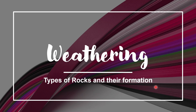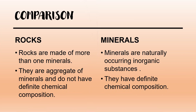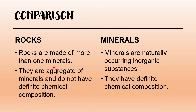Rocks are made up of one or more than one mineral. They are aggregate of minerals and do not have any definite chemical composition. On the contrary, minerals are naturally occurring inorganic substances and they have a definite chemical composition.